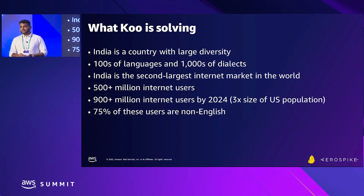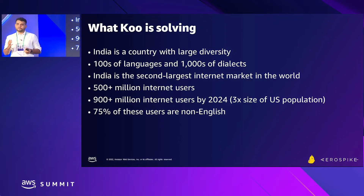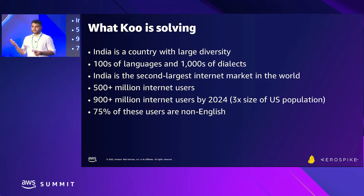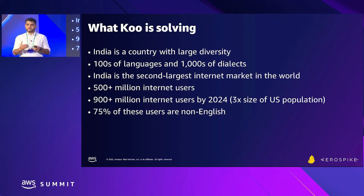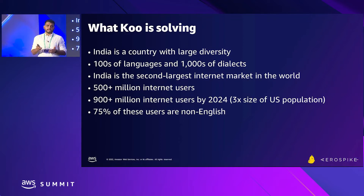India is a very diverse country with many cultures and languages. Koo provides a platform where people can express concerns relevant to their society and get a very hyper-local environment. A good example: an IPS officer from Darbhanga, Bihar, won't have as many followers on Twitter as on Koo, because his actual community — the people who want to listen to him — are more present on Koo. The app connects you to the actual people you need. Location and language are very important aspects.